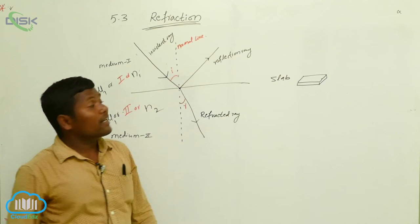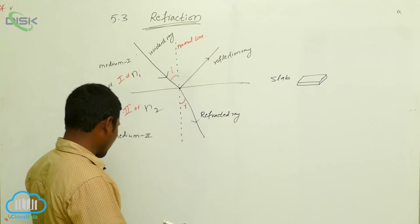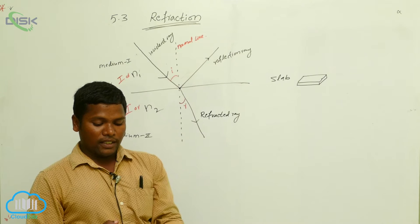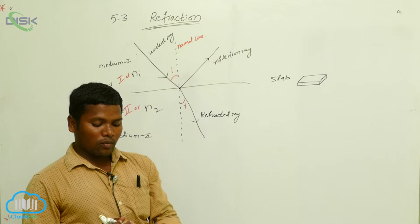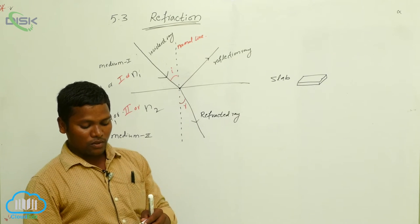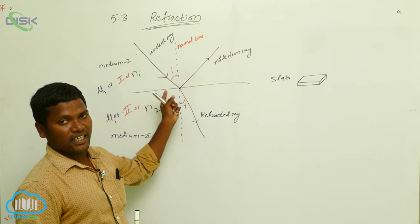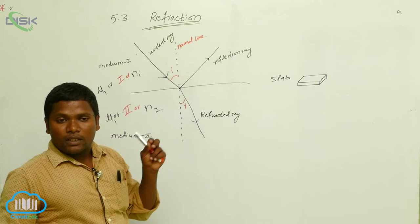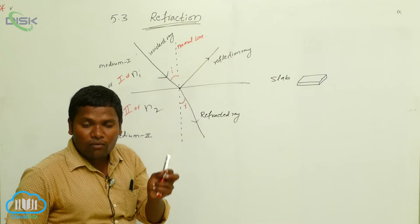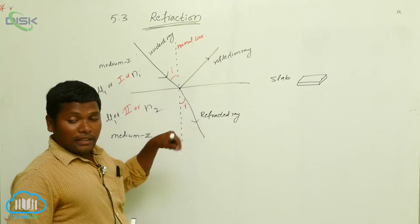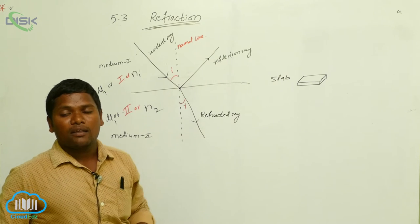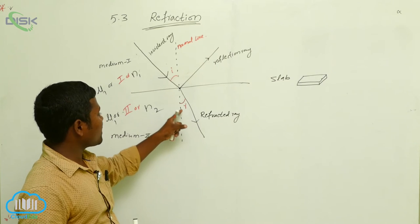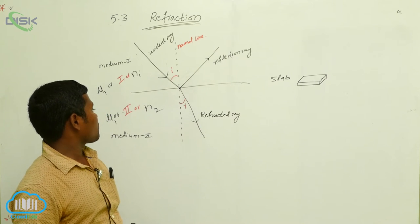Now I am going to define refraction. For refraction to happen, how many surfaces should be there? Definitely two surfaces. Light is coming from one place to another — it strikes one surface, some part goes back, and some part travels to another medium. Refraction definition: light is traveling from one medium to another medium, it is slightly bent as it travels to the other medium. This phenomenon is called refraction.